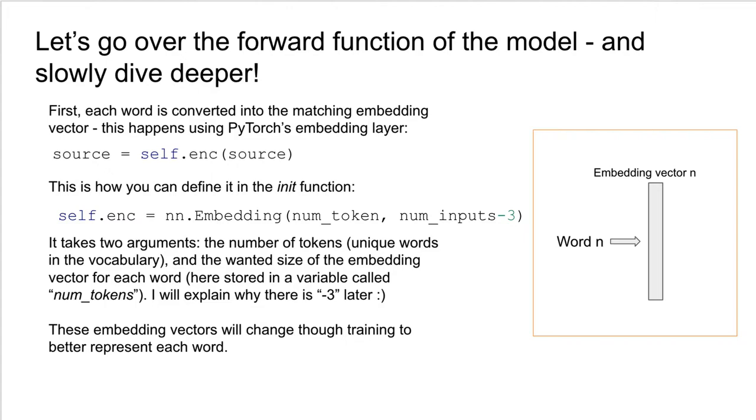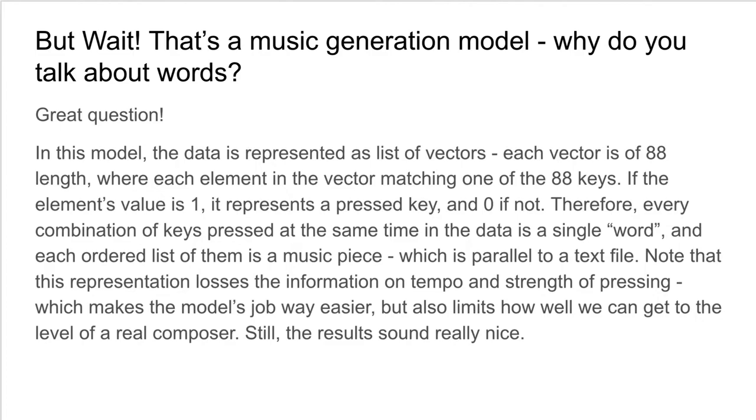Alright, let's go over the forward function of the model and slowly dive deeper. First, each word in our, let's call it sentence, is converted into a matching embedding vector. This happens using PyTorch's embedding layer. You can see here how you can define it in the init function. Basically it takes two arguments, the number of tokens, unique words in the vocabulary, and wanted size of the embedding vector for each word. Here we store it in a variable called num-tokens. I will explain why there is a minus three there later. These embedding vectors will change through training to better represent each word.